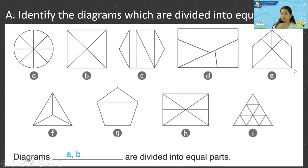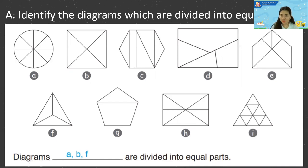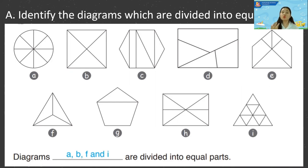Letter F — that is equal. Letter G — it is not equal. Letter H — no, because this triangle is smaller than the other, so unequal. Letter I — that is correct, it is equal. So we have four diagrams with equal parts: letter A, letter B, letter F, and letter I.